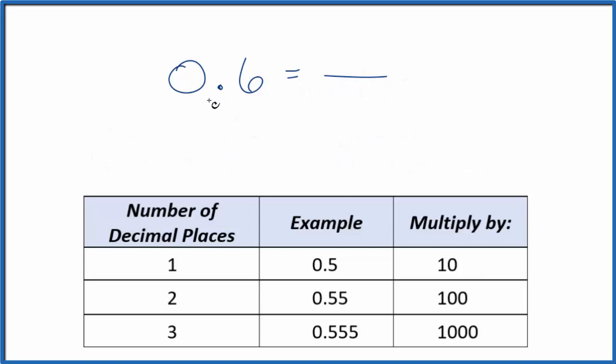So to start with we're just going to put 0.6 over 1. It's still 0.6, we're just dividing by 1, but now we have the start of a fraction. Next, since we have one decimal place here, we're going to multiply by 10. We're also going to multiply the bottom by 10. So we have 10 over 10. 10 divided by 10, that's 1. We're just multiplying by 1. We're not changing the value, just the way it's expressed.